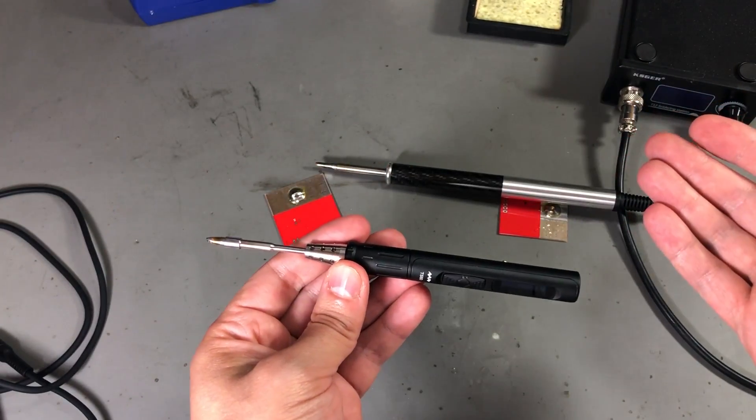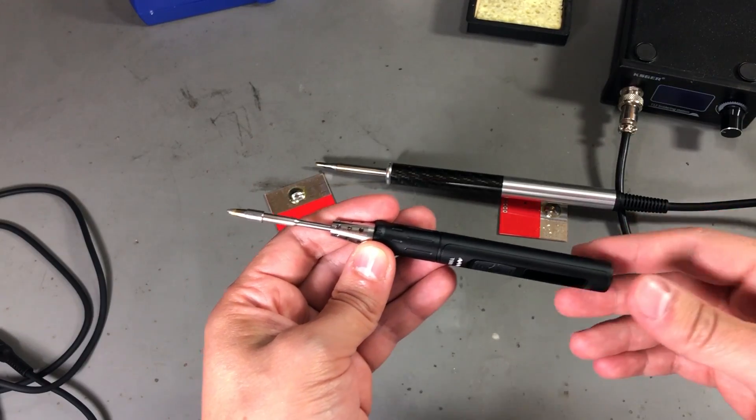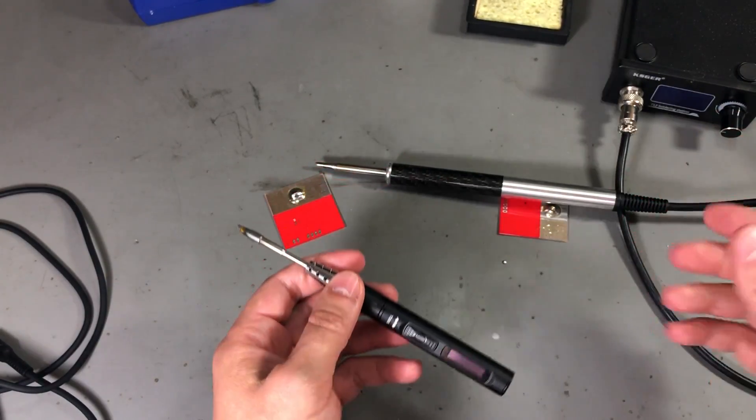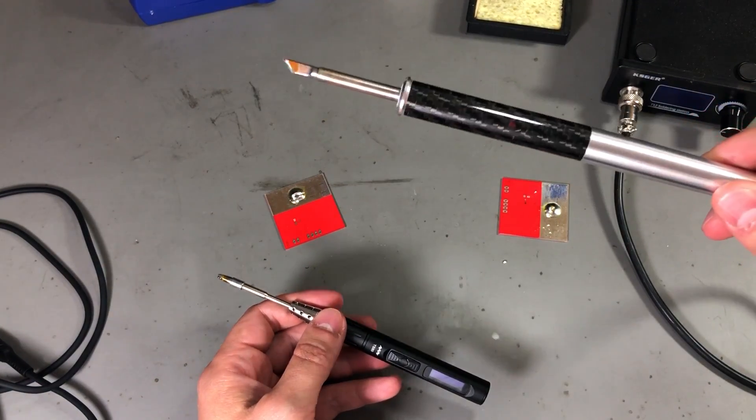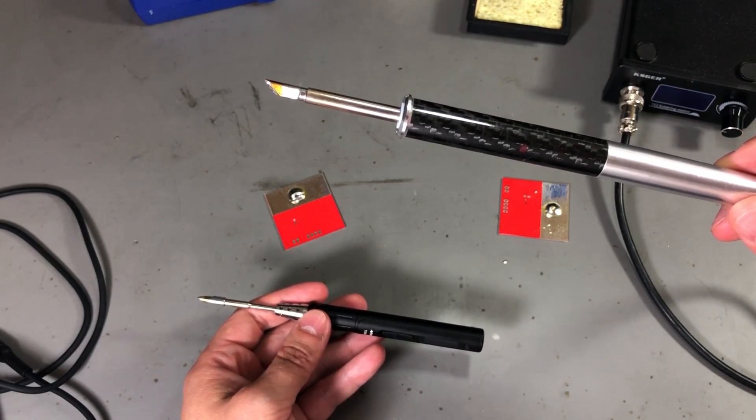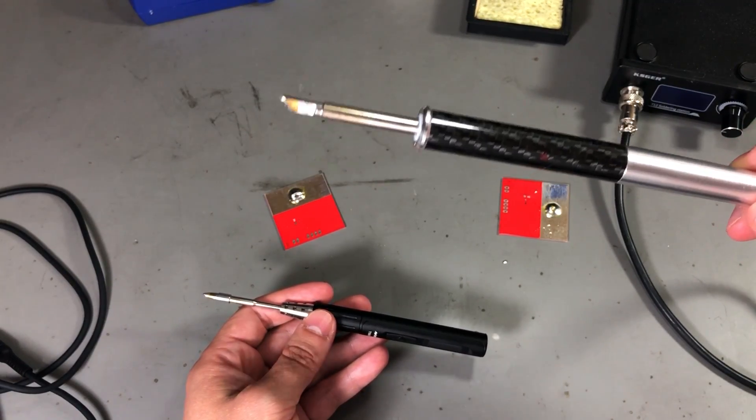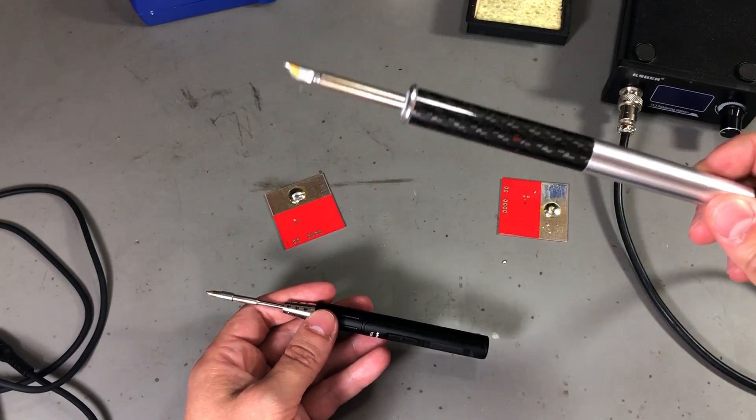So if you can afford to get both, by all means get both. But if you can only afford one of them, then a Kaysger T12 station will get you a better soldering experience because it has higher power and it's cheaper to get replacement T12 tips.